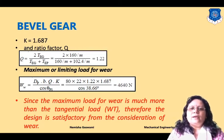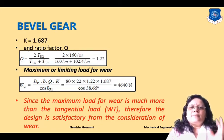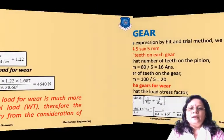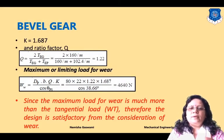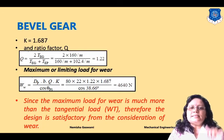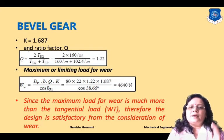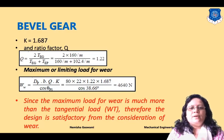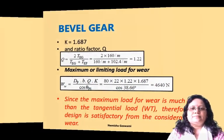To check if the design is safe: if the maximum wear load is greater than the tangential load, the design is safe. The tangential load was 597 N and the wear load is 4640 N. Since 4640 N > 597 N, all parameters satisfy the design requirements. The wear load exceeds the tangential load, so the design is safe.